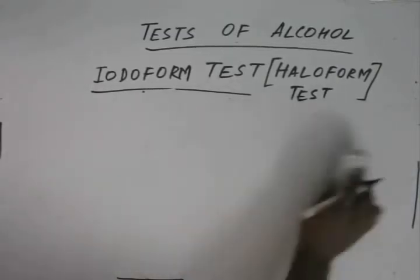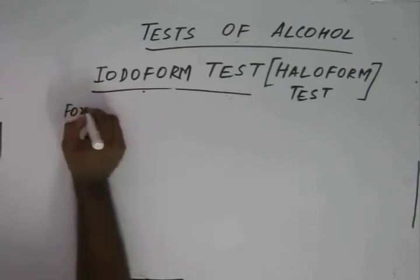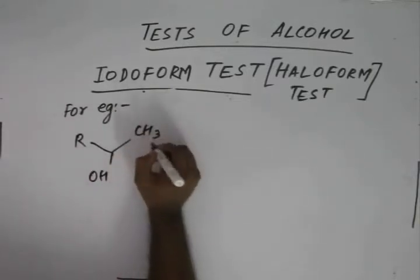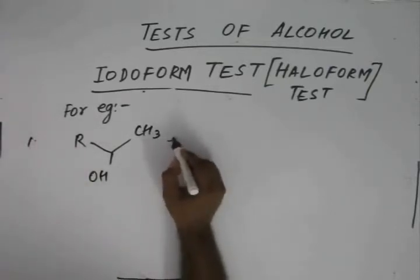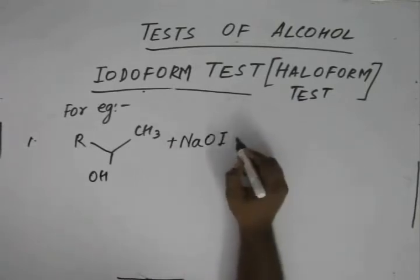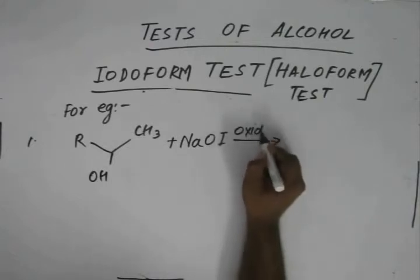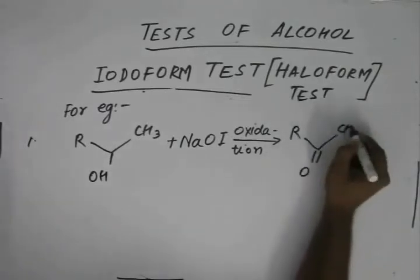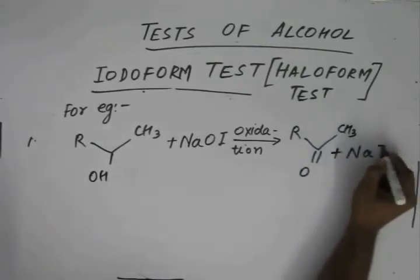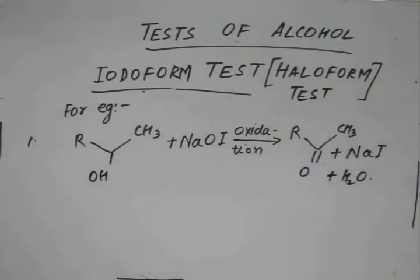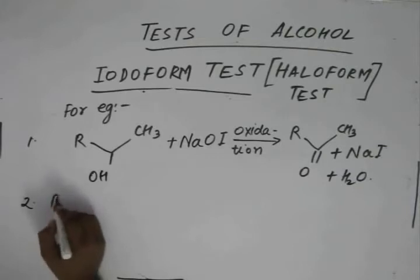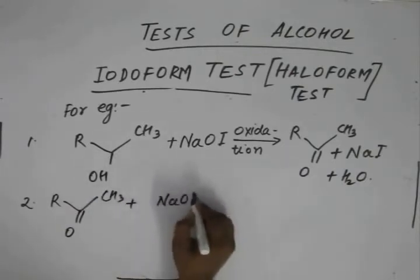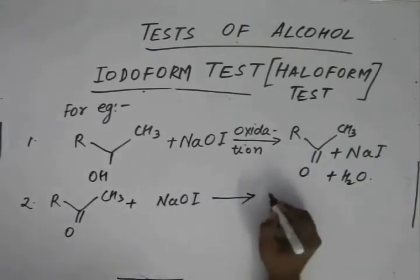Let us take up an example. Assume we have an alcohol. In the first step, when it reacts with NaOI — the aqueous salt — it undergoes oxidation, and we are left with the corresponding carbonyl compound plus sodium iodide plus water.